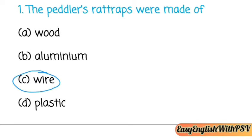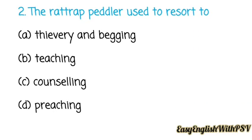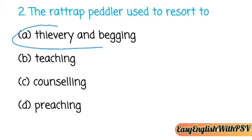Question number two: The rat trap peddler used to resort — meaning depend — to: Thievery, Begging, Teaching/Counseling, or Preaching? The answer is option A. He was unable to make both ends meet, body and soul together, that is why he was dependent on thievery as well as begging.